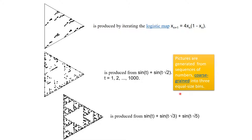Coarse graining is like a strainer with different hole sizes — you segregate particles of different properties. We divide all the real numbers into three equal-size bins, each numbered 1, 2, 3. If the number falls in bin one, we use vertex one; if the next number falls in bin two, we use vertex two; otherwise vertex three, and so on.